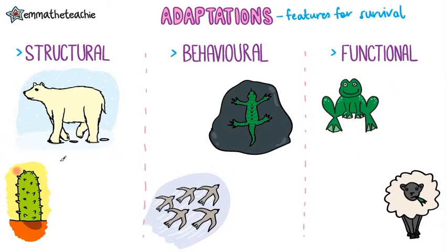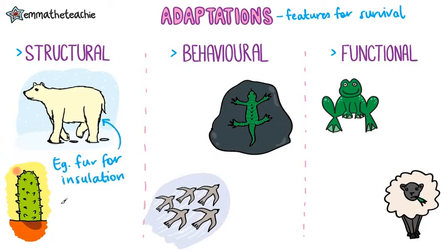Structural adaptations are physical characteristics. For example, polar bears have fur to insulate them in a cold environment. Another example is that cacti have spines instead of leaves to reduce the surface area, so less water is lost in a hot and dry desert environment.